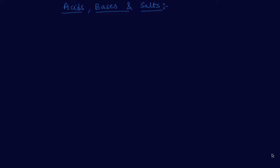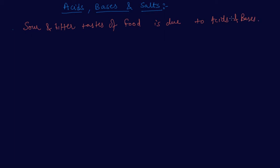You might have learned in your previous classes that the sour and bitter taste of foods are due to acids and bases. So how will we check that there is some acid or some base in a particular food? Acids are sour in taste, and they change the color of litmus paper. What is the effect on litmus paper?